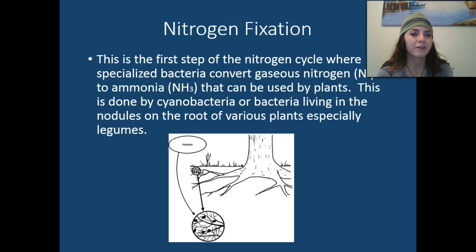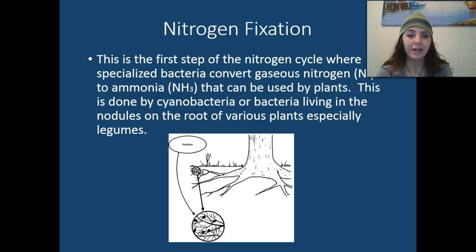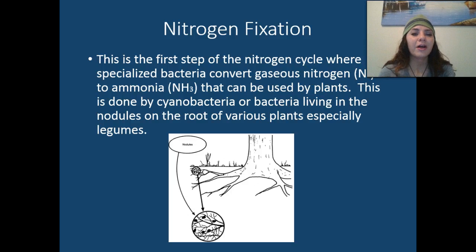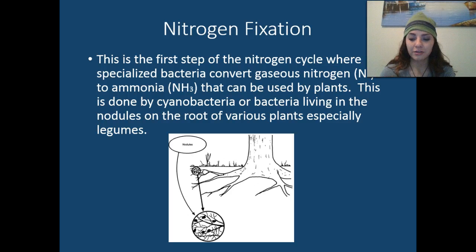Nitrogen fixation is the first step of the nitrogen cycle, where specialized bacteria convert gaseous nitrogen to ammonia that can be used by plants. This is done by cyanobacteria, or bacteria living in nodules — little bumps or rounded structures found on the roots of various plants, especially legumes such as peanuts, alfalfa, and soy. Nitrogen fixation can also occur when lightning strikes.